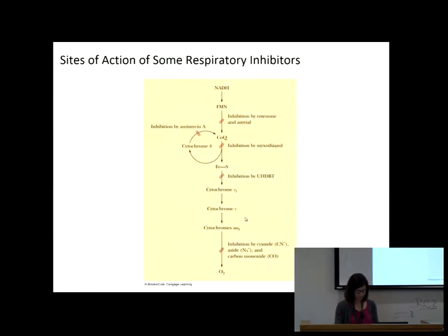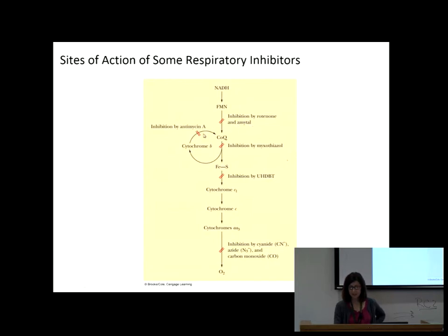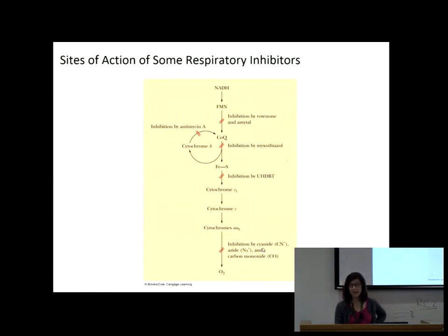This is what they found using these respiratory inhibitors. These molecules are blocking these specific sites in the electron transport chain. That's why carbon monoxide, cyanide, and azide are so dangerous.